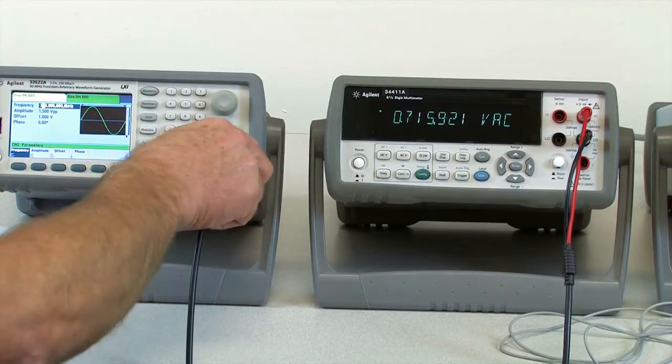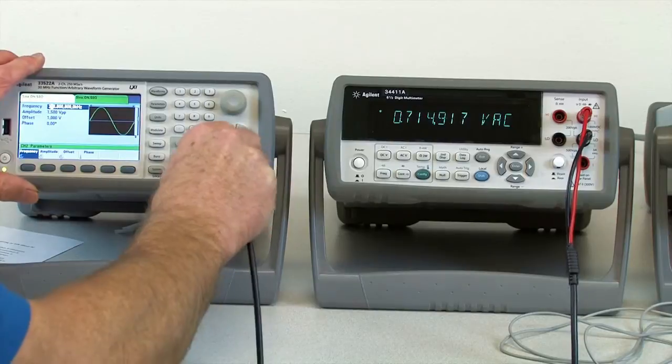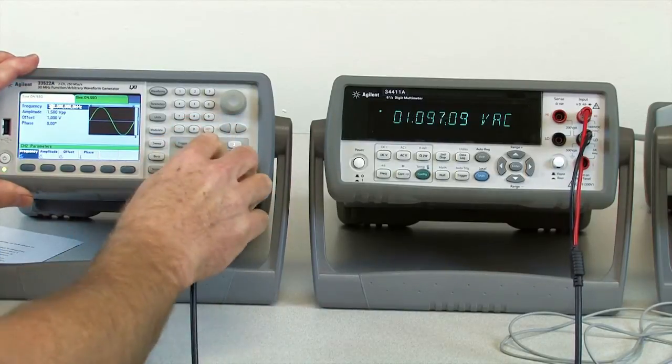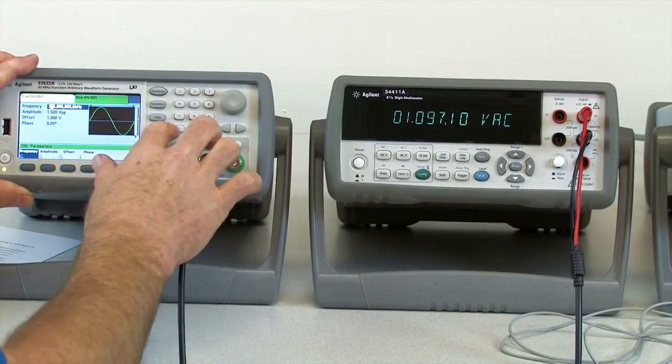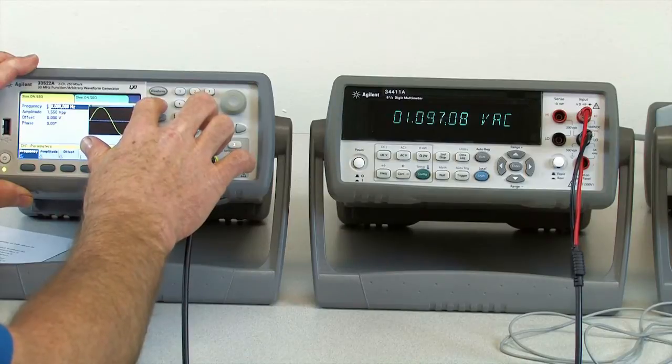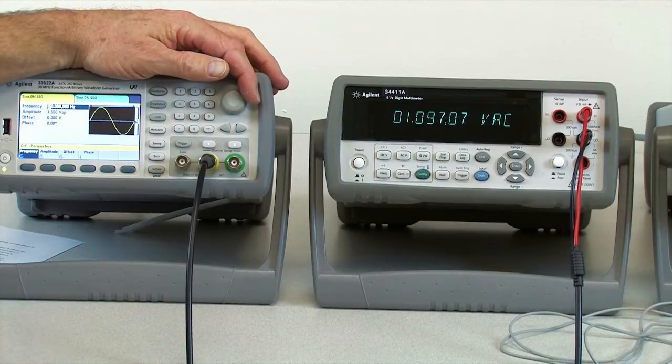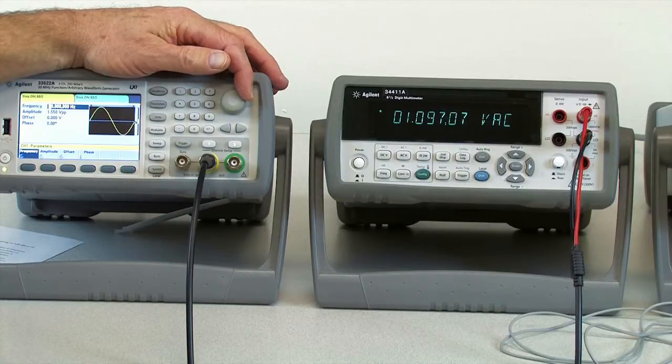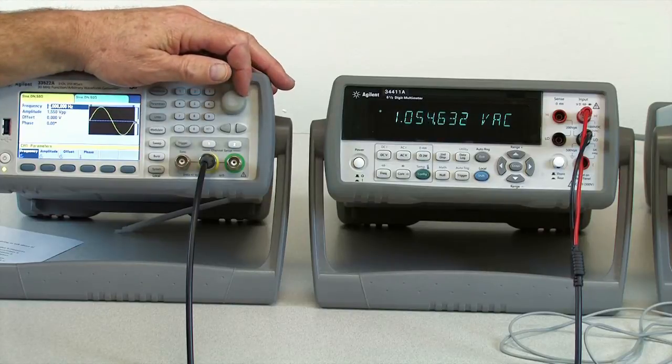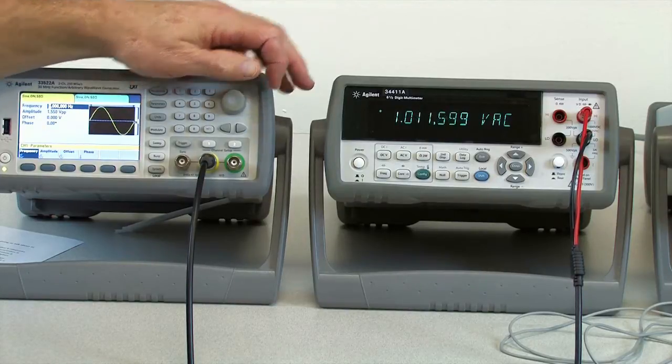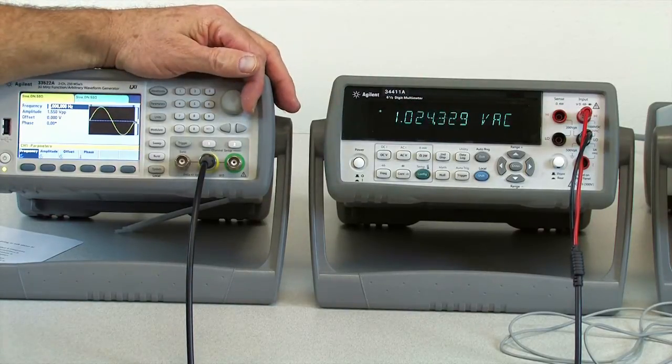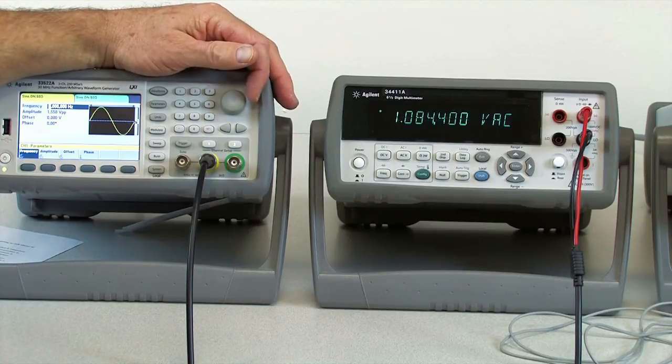On the other end of frequency, we can go to the low end. I have a low frequency signal set up on my other channel of my function generator, set to 20 hertz right now. As I start to reduce the frequency, you'll see the measurement will start to jump around and eventually it becomes inaccurate.